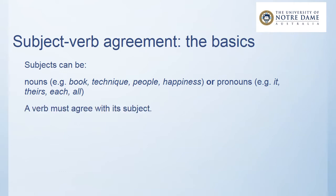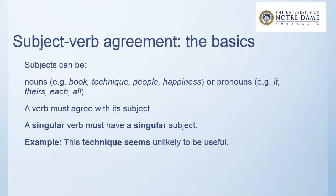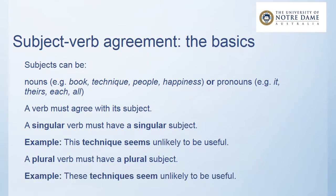A verb must agree with its subject. A singular verb must have a singular subject. For example, 'this technique seems unlikely to be useful' — 'seems' is the singular verb. A plural verb must have a plural subject. For example, 'these techniques seem unlikely to be useful' — 'these techniques' must match with 'seem'.